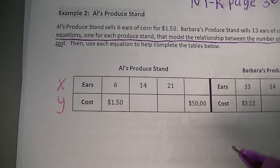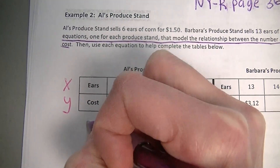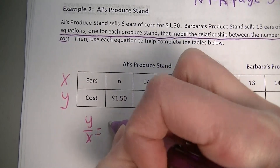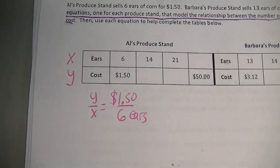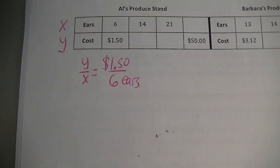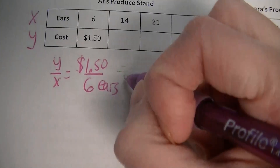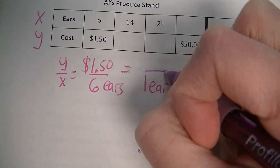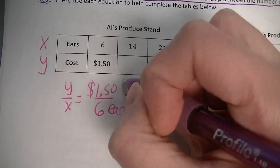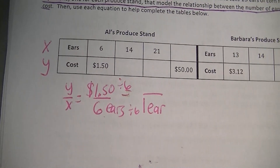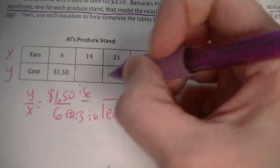We need to find the unit rate before we write our equation. I'm going to go y divided by x to find my unit rate. The y value is the cost — it's $1.50 for six ears of corn. That's just the rate; we need to find the unit rate. I want one in the denominator because I want to know how much it is for one ear of corn. To go from six to one you have to divide by six. So $1.50 divided by six gives you 25 cents per ear.